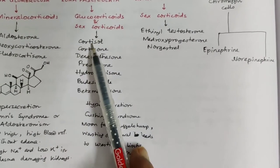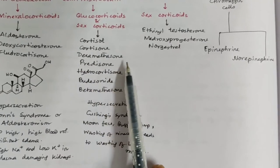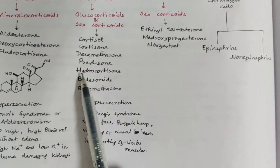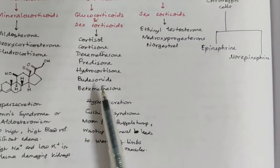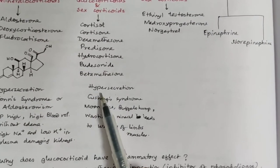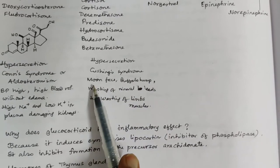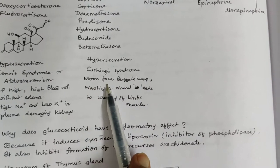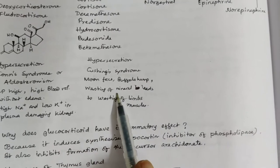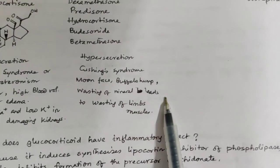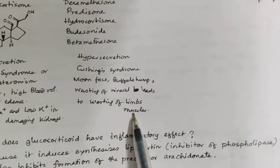The second layer is zona fasciculata, which secretes glucocorticoids and sex corticoids like cortisol, cortisone, dexamethasone, prednisone, hydrocortisone, prednisolone, and budesonide. Its hypersecretion results in Cushing's syndrome, with symptoms like moon face, buffalo hump, and wasting of limb muscles.